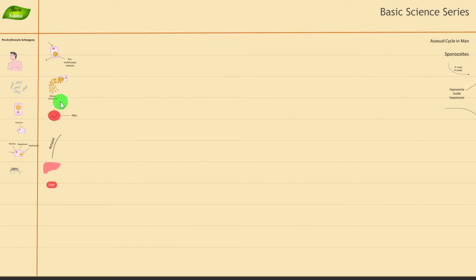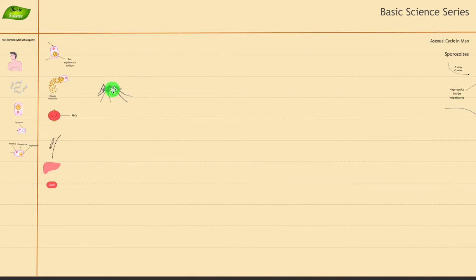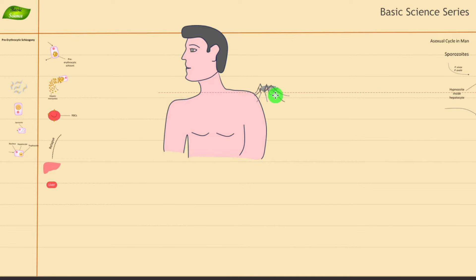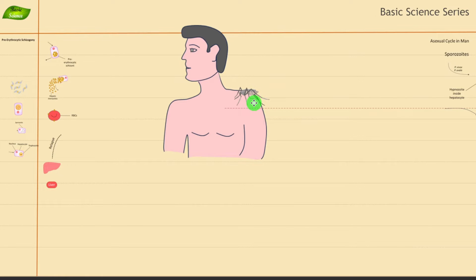The female Anopheles mosquito requires blood for the egg-laying process. So the mosquito will come and bite the human for a blood meal, and during that process it will release sporozoites from its salivary glands into the human. These sporozoites are present in the mosquito and are deposited into the human blood.